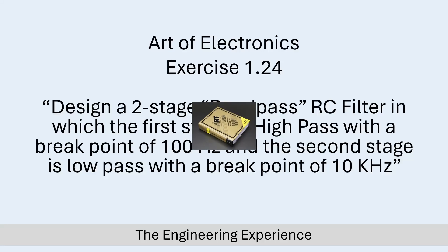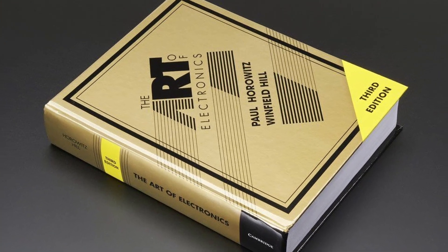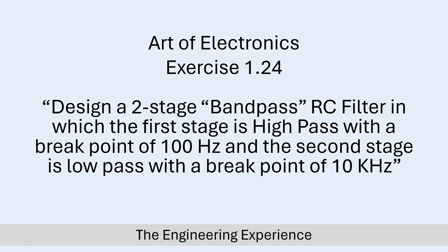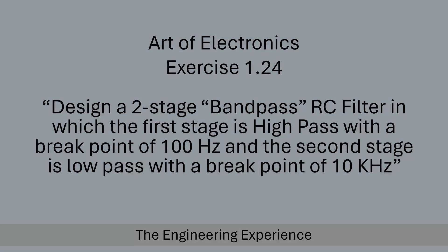Hello, in today's exercise I'm going through exercise 1.24 from the Art of Electronics. For this exercise we need to design a two-stage bandpass filter using RC components. From the question we need to set the first stage as a high pass filter and then the second stage will obviously follow as a low pass filter. To get a better understanding of the main points in this video, I think it's best you check out the last video as well, where I go through exercise 1.23, where we calculate the input and output impedances for RC filters, as that is very relevant in this question.